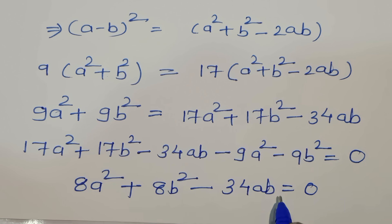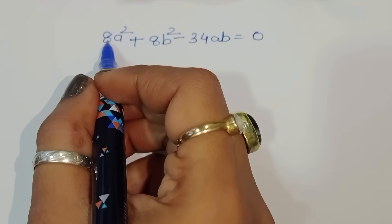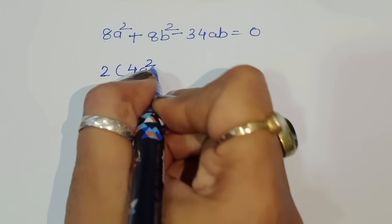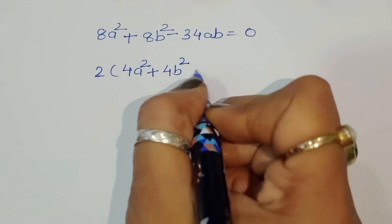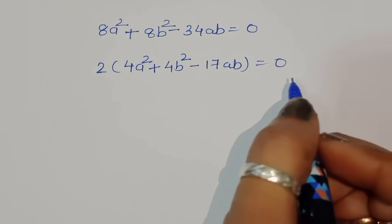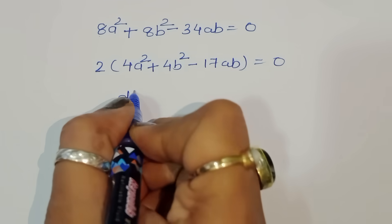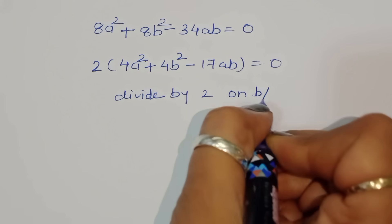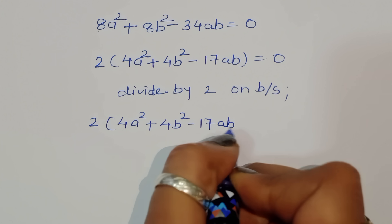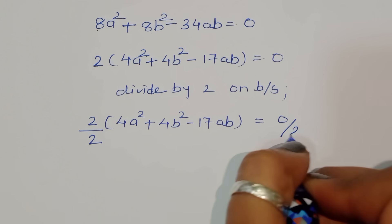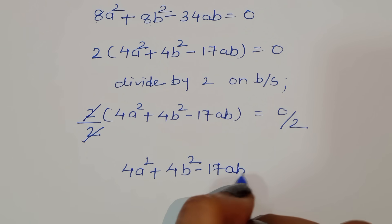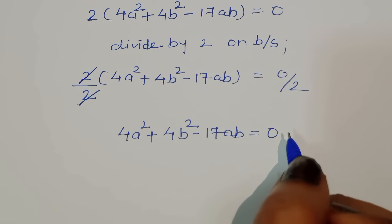We can take out common factor 2: 2(4a² + 4b² - 17ab) = 0. Dividing both sides by 2, we get: 4a² + 4b² - 17ab = 0.